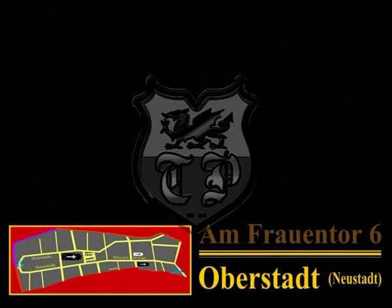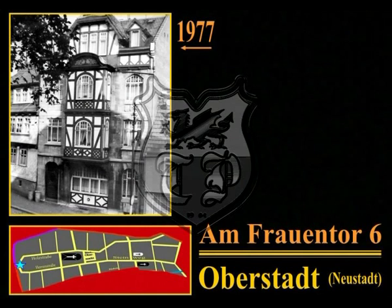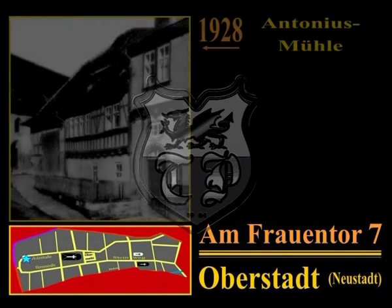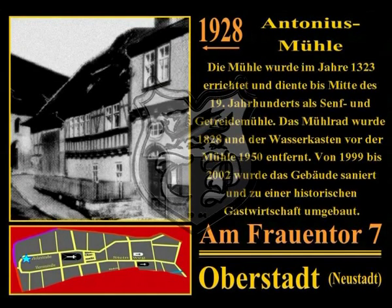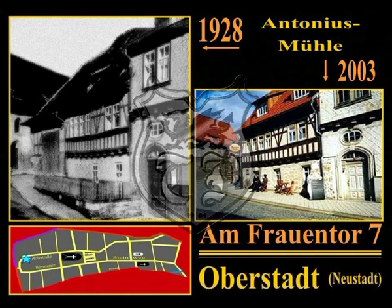Am Anfang des Rundgangs durch die Oberstadt steht das Haus am Frauentor 6 mit einer Aufnahme aus dem Jahre 1977 im Vergleich zu einem Foto aus dem Jahre 2012. Der Straßenbogen zwischen der güldenen Ecke und der Holzstraße wurde erstmals 1376 als Contra Valuam Domine Nostre erwähnt und nach dem Frauentor benannt. Am Frauentor Nummer 7 steht die Antonius-Mühle, errichtet 1323, die bis Mitte des 19. Jahrhunderts als Senf- und Getreidemühle diente. Von 1999 bis 2002 wurde das Gebäude saniert und zu einer historischen Gastwirtschaft umgebaut.